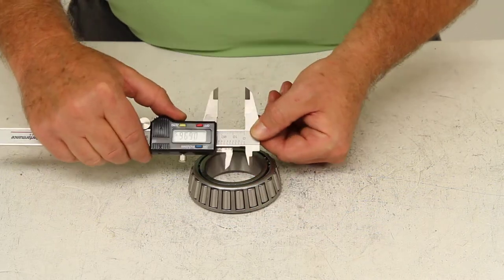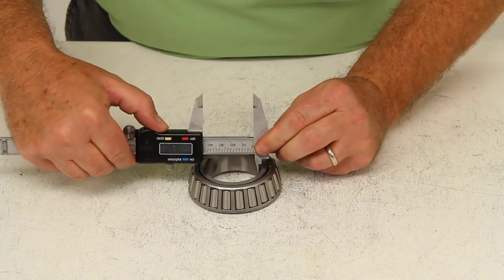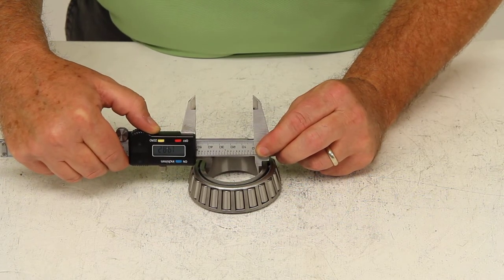So if we put the digital caliper on the inside, get the internal measurement, the inner diameter would be two inches.